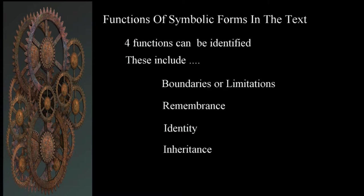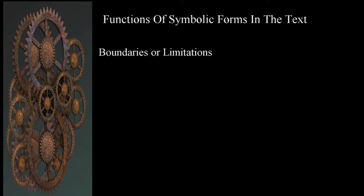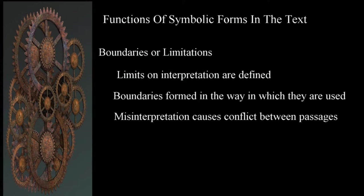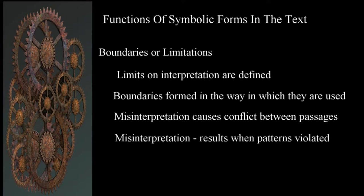Let's take a closer look at each of these functions. Boundaries or limitations: as symbolic, figurative, and prophetic elements appear, we'll see that they define limits in the way they can be interpreted. The idea of a boundary is useful when we see that there are ways in which certain forms are used. Interpreting them incorrectly will create problems between passages because the consistent utilization has been violated. Symbolic elements are detectable by the consistent way in which they're used, and failure to recognize these patterns will lead to failures in understanding their meaning.